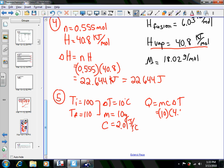So Q is MC delta T. You have 10 grams, 2.01, 10 degrees Celsius. Another 201 joules.